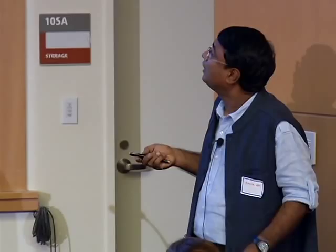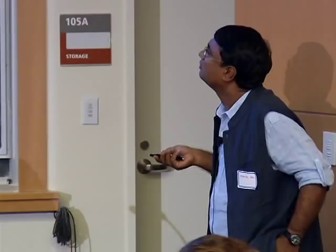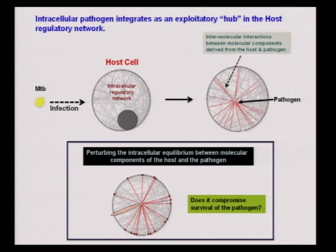Depending on the equilibrium — defined by a variety of host factors and pathogen-derived factors — the equilibrium is set. In molecular terms, one way of representing this is through the protein components that constitute the host cell. All of these proteins engage in a very complex network of interactions, and it's these interactions that drive various cellular functions — metabolism, transcription, signaling, and so on. The infection establishes itself as an exploitative hub of this network, manipulating its functioning through interactions with key proteins.